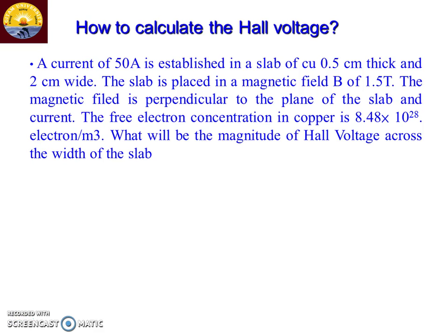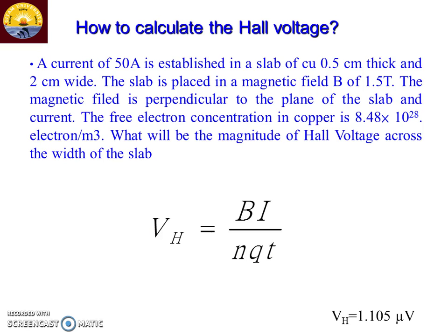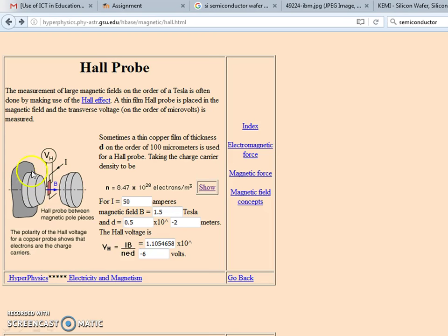Let us take an example problem. The current passing through a copper sample is 50 amperes. The dimensions of the sample are 0.5 cm thickness and 2 cm wide. It is placed in a transverse magnetic field of 1.5 tesla. Given the carrier concentration, we need to find the Hall voltage across the width of the slab. Using the expression VH = IB/(NQT), and substituting all the known parameters — current, magnetic field, carrier concentration, and thickness — the answer is 1.105 microvolts (1.105 × 10⁻⁶ V).